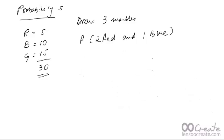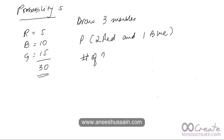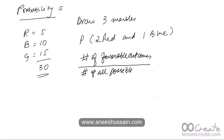We will also solve this same question by an alternate method. The alternate method goes back to the basics of probability: probability equals the number of favorable outcomes divided by the number of all possible outcomes. In this method we use combinations. The favorable outcome is getting two red marbles out of five total red marbles, so that's 5C2, multiplied by the number of blue marbles we want—one out of ten—so that's 10C1.